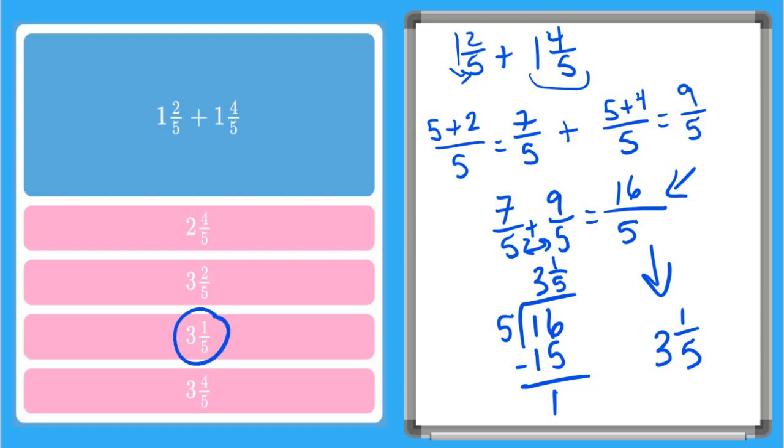So now whenever you have to add mixed numbers, you can choose how you want to do it. Adding the whole numbers together and then adding the fractions, or converting my mixed numbers to improper fractions and adding across. Practice what you've learned by doing the online quizzes. Have fun, and remember to always be clever!